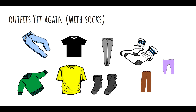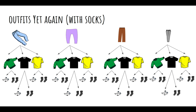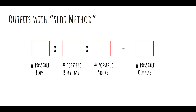Now, let's add socks. Let's say we have two new pairs of socks. We start with the 12 that we had, and for each of those 12 outfits, we can choose two pairs of socks, so actually there are 24 different outfits. How do we count this with the slot method instead of drawing every single thing? You just say: how many possible tops — three; how many possible bottoms — four; and how many possible socks — two. The number of total outfits is the product, which is 24.